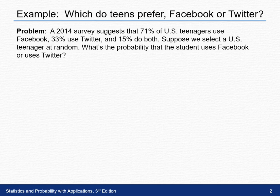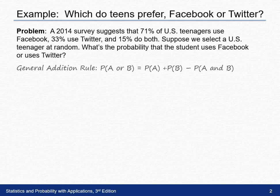When I read this example, I notice that I'm given three probabilities, and I'm asked for the probability that a student uses Facebook or Twitter. When I see that word 'or,' I know that I'm going to want to use what we call the general addition rule.